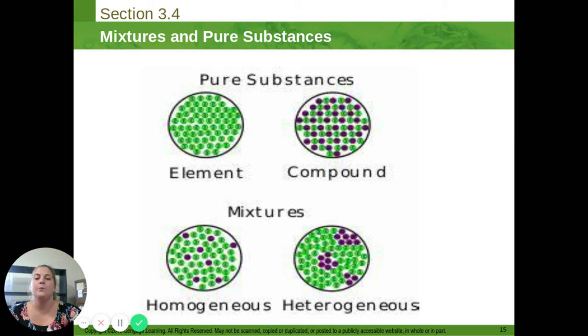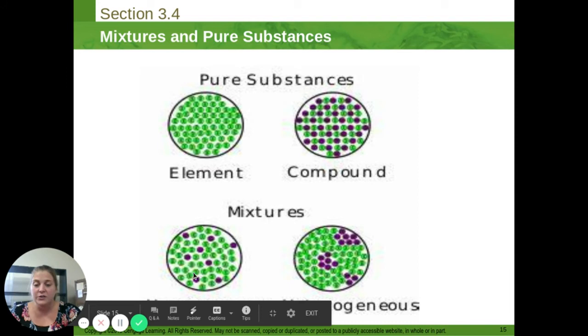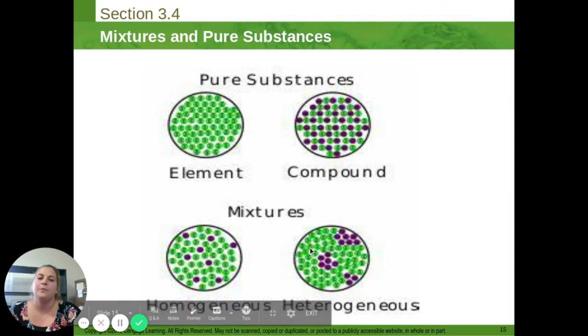So pure substances can be elements or compounds. We have elements all the same atom on the left. And on the right, we have chemically combined two different elements. Our homogeneous mixture has the two different elements, but they're randomly dispersed throughout. And then the heterogeneous mixture has discrete pockets of different elements.